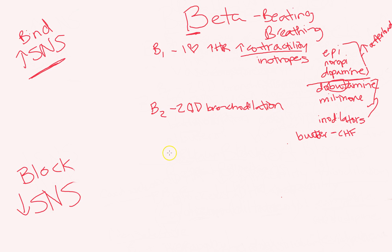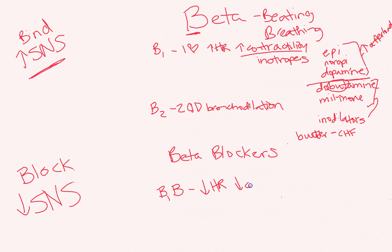Now let's talk about beta blockers in the bottom column. If we block beta 1 — BB for beta blocker — we're going to have decreased heart rate and decreased contractility. That's great for people whose heart rate is naturally too high, like atrial fibrillation or atrial flutter, or for people with high blood pressure — we want to relax the heart so it's not working as hard and not producing as high a blood pressure.